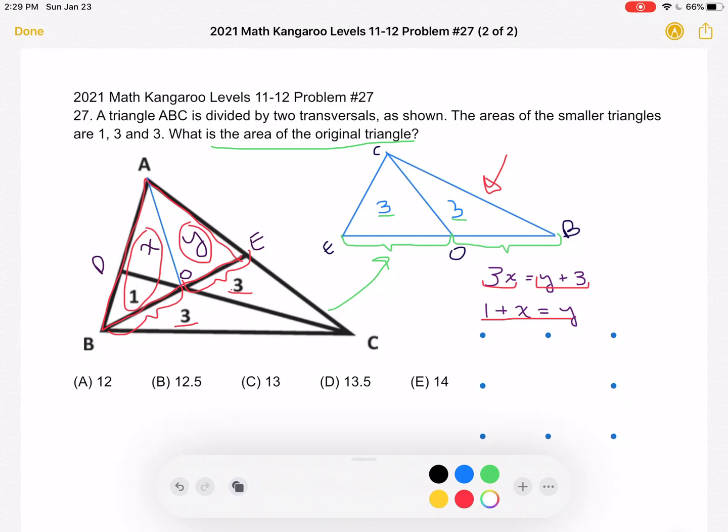So now we can combine these two equations, rewrite Y in terms of X, and then put it back in the first equation and we can solve. So again, we rewrote Y as being 1 plus X. So we have 3X is equal to 1 plus X plus 3.